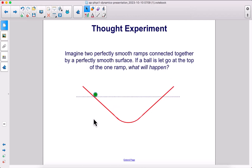Imagine two perfectly smooth ramps connected together by a perfectly smooth surface. If a ball is let go at the top of the one ramp over here, what will happen?